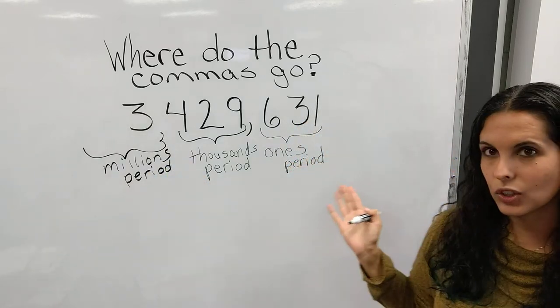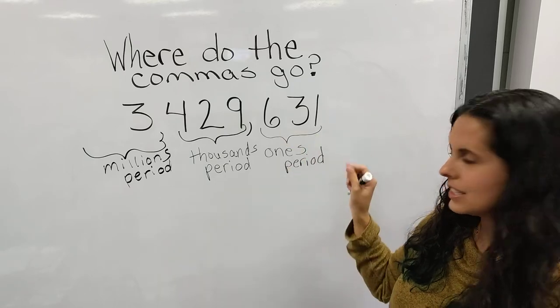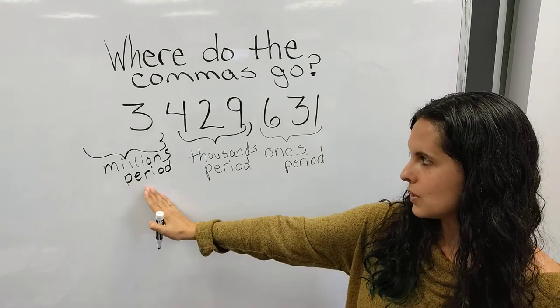Okay, so that's how you know where the commas go. It separates your periods and there's three digits in that period. So your ones period, your thousands period, your millions period.